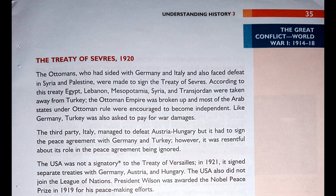The Treaty of Sèvres 1920: The Ottomans, who had sided with Germany and faced defeat in Syria and Palestine, were made to sign the Treaty of Sèvres. According to this treaty, Egypt, Lebanon, Mesopotamia, Syria and Transjordan were taken away from Turkey. The Ottoman Empire was broken up and most of the Arab states under Ottoman rule were encouraged to become independent. Like Germany, Turkey was also asked to pay for war damages.